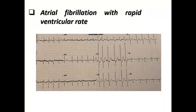AF with rapid ventricular rate can also cause ST depression — as seen here with depression from V1 to V4. The mechanism is nearly the same as SVT: either rate-dependent myocardial ischemia or repolarization abnormality with rapid AF.